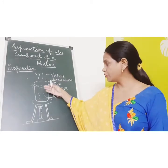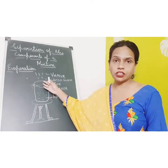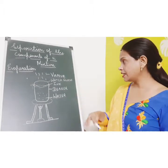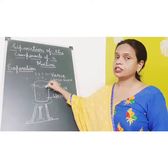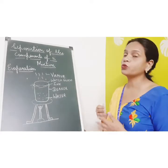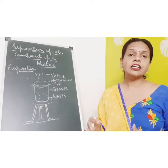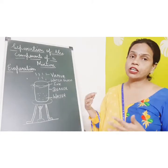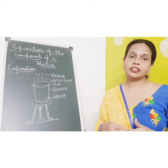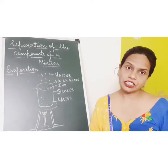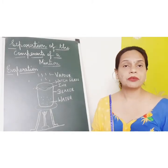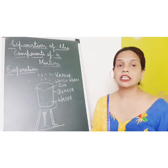Once we start heating the water, the heat reaches the watch glass. Ink is a mixture of water and dye. Because of the heat, the water present in the ink starts getting converted into vapor. When the entire water gets evaporated, the dye is left behind. So evaporation, centrifugation, and filtration are the different methods for separating solids from liquids.